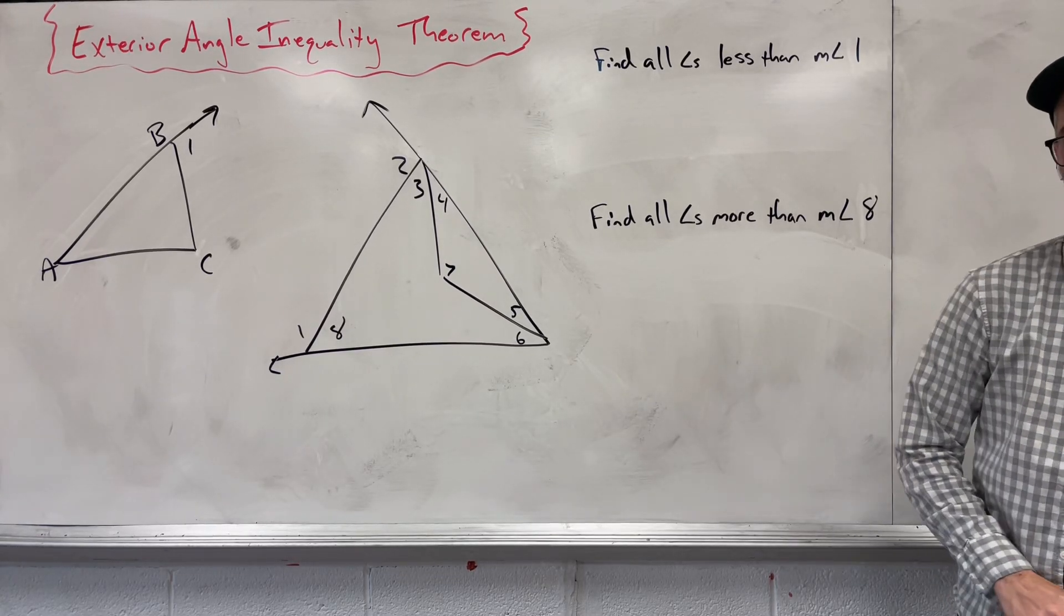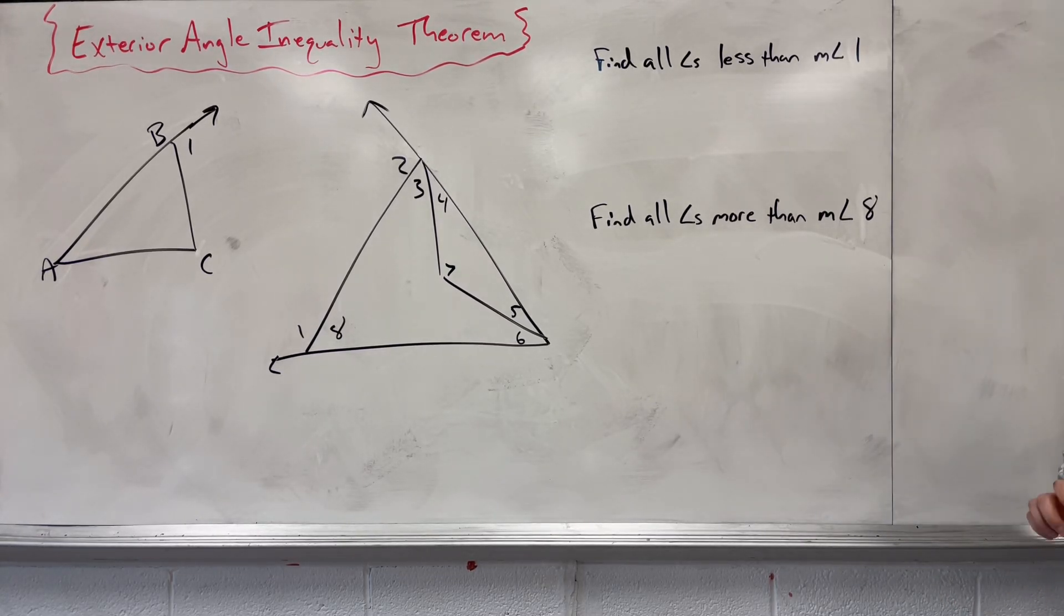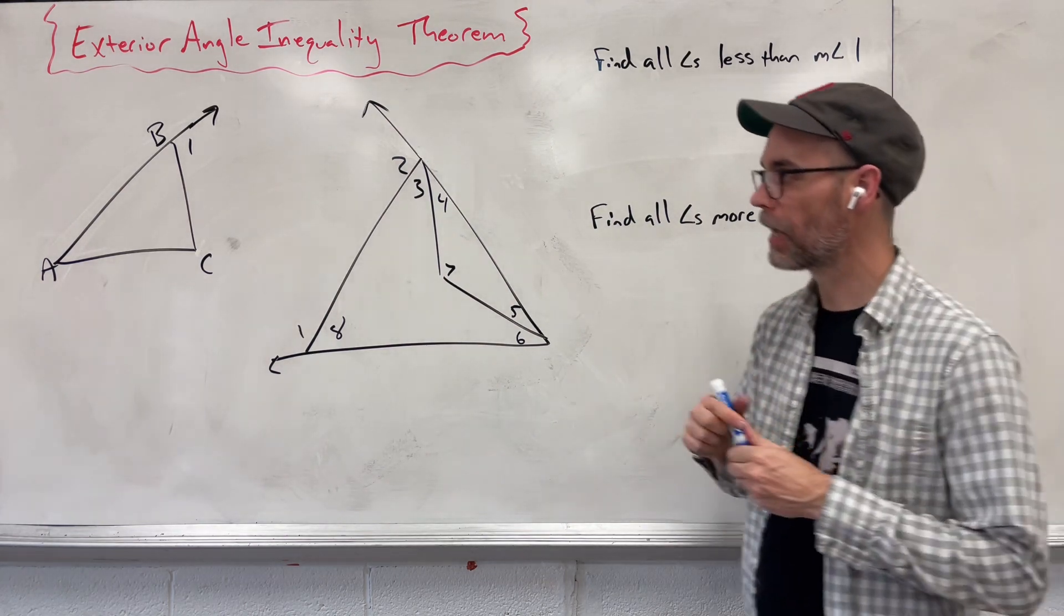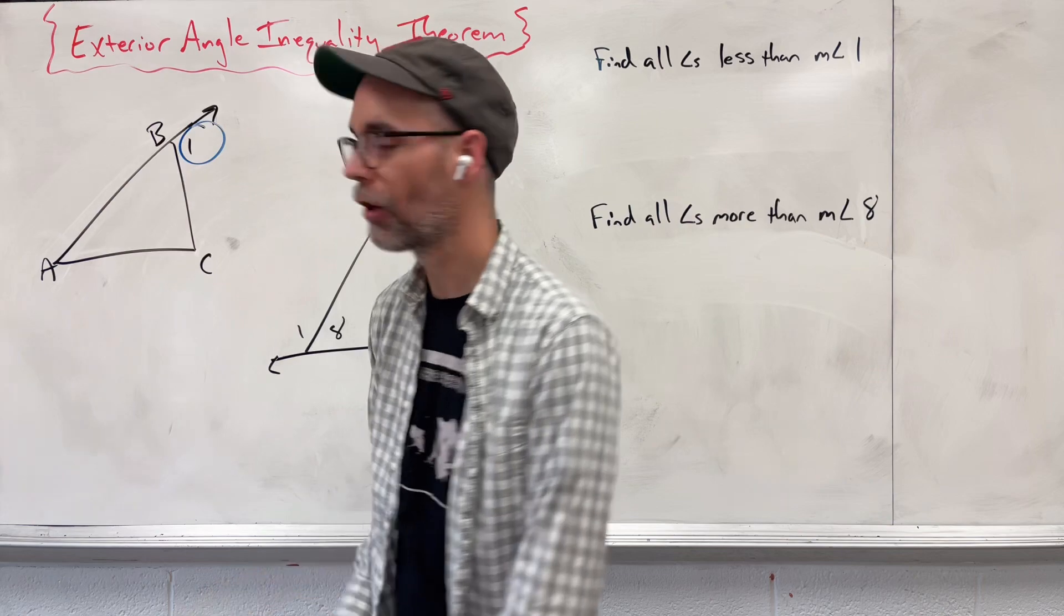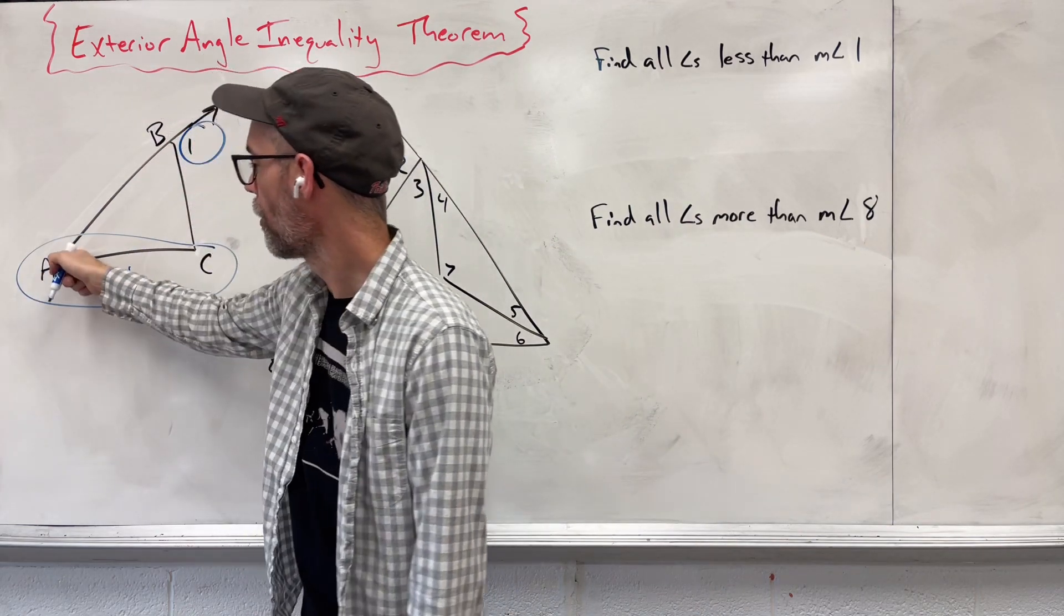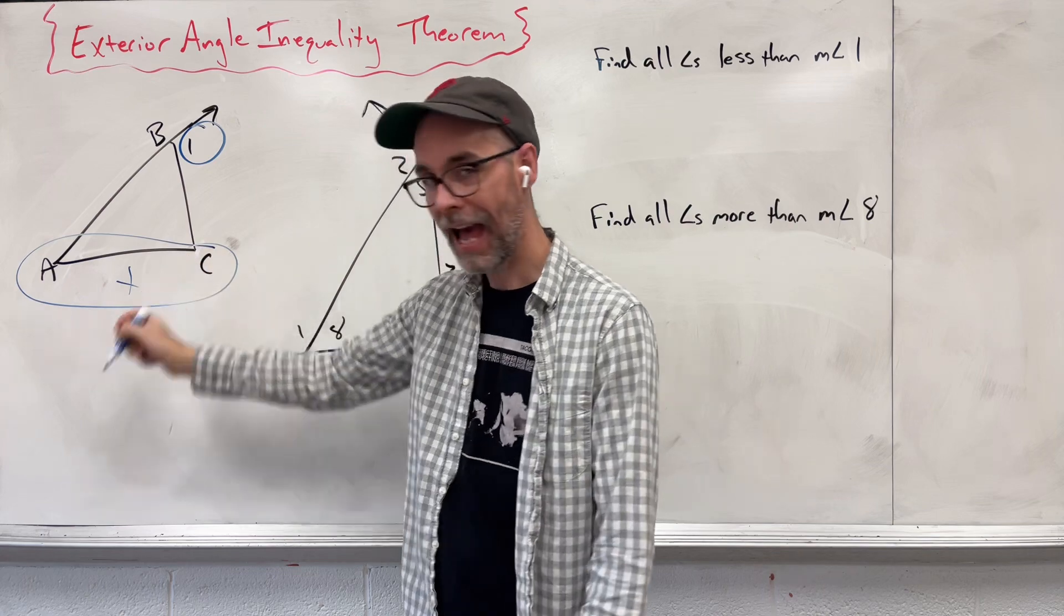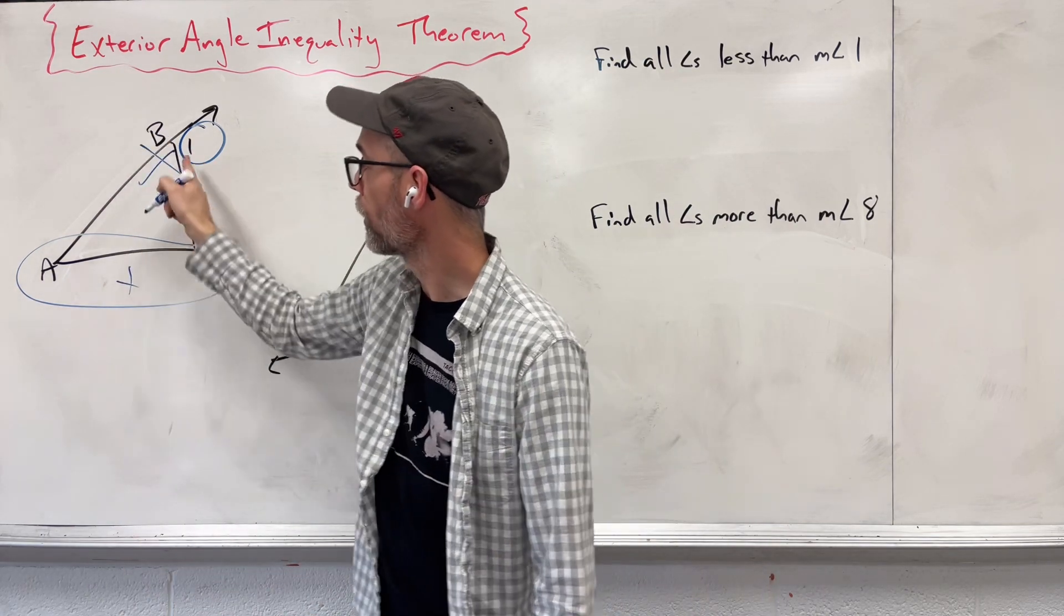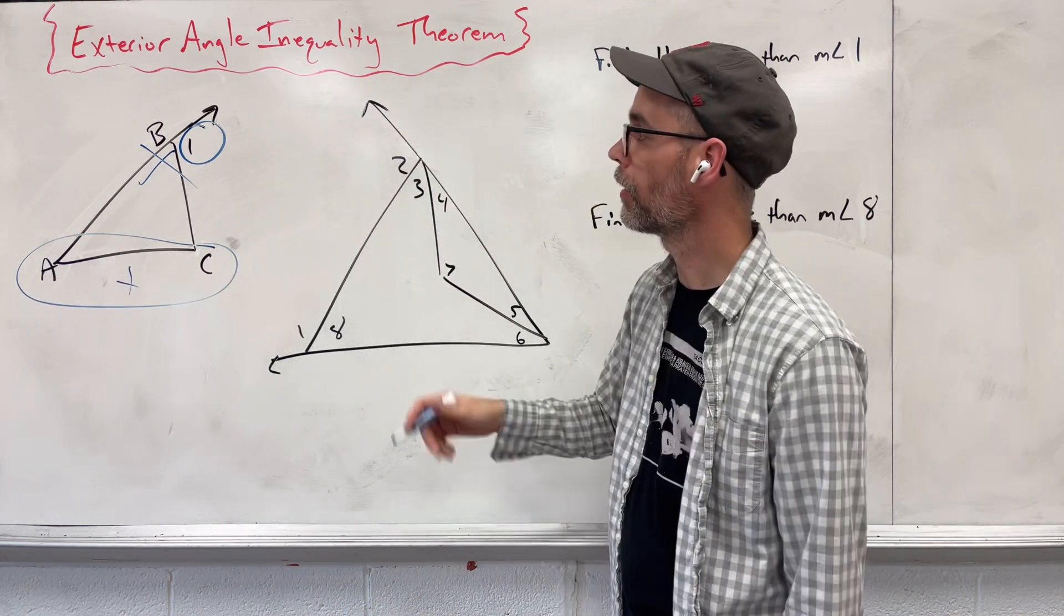Hi, today we're going to take a look at the Exterior Angle Inequality Theorem, which is very similar to the Exterior Angle Theorem. This says our exterior angle here holds the same value as my angle A plus C added together. I do not care about what's happening over here—it's my two remote opposite sides added together.